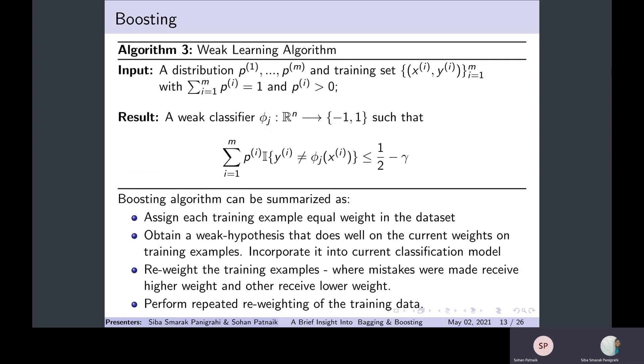Let me propose a weak learning algorithm. As discussed earlier, we input a distribution of probabilities p1, p2, till pm on the training set (x1, y1), (x2, y2), till (xm, ym), and it is normalized - the sum of all probabilities equals one. The result of this algorithm is that it returns a weak classifier φ_j whose error is slightly less than 0.5.